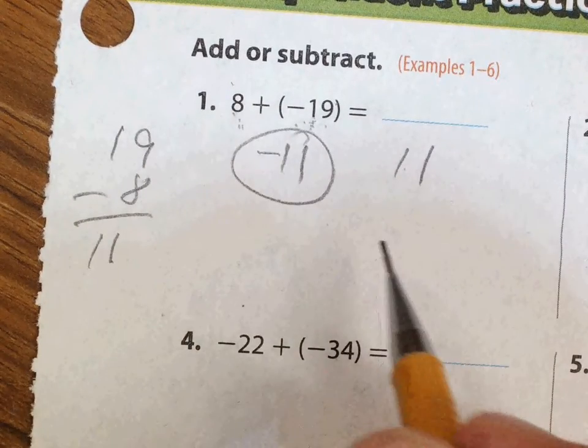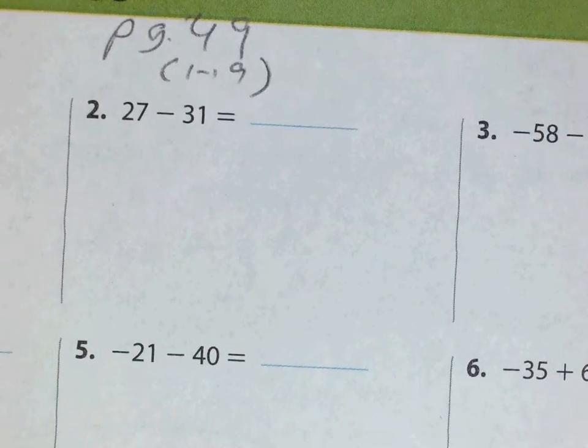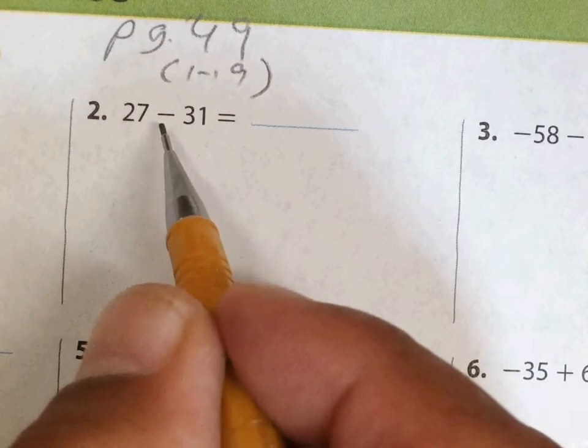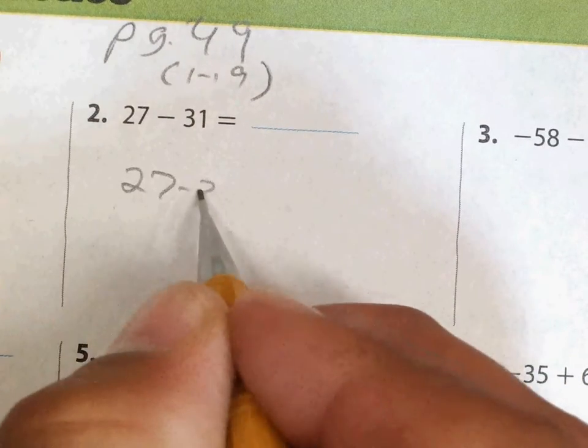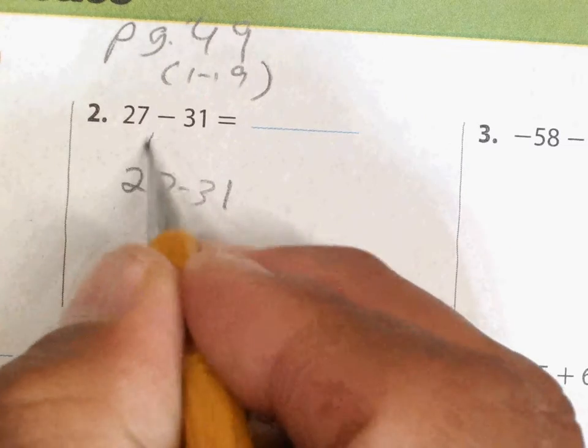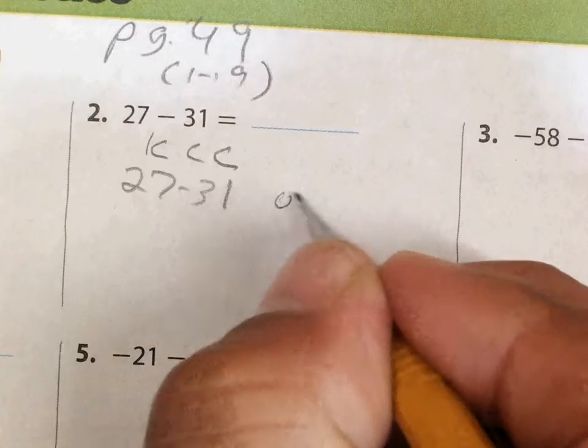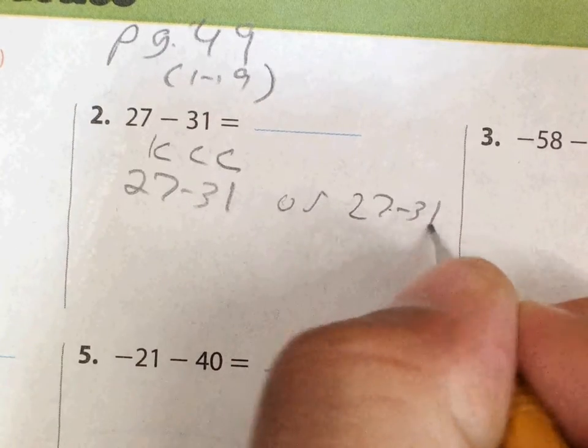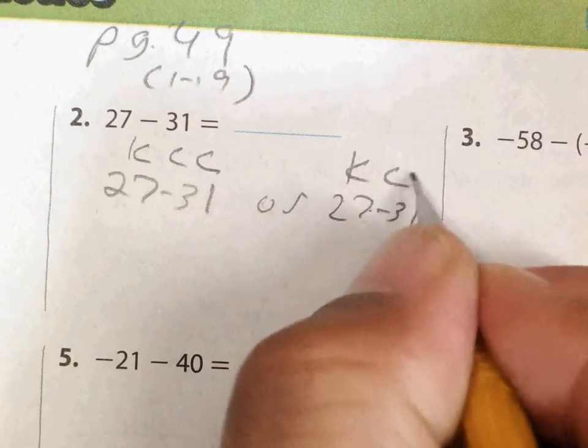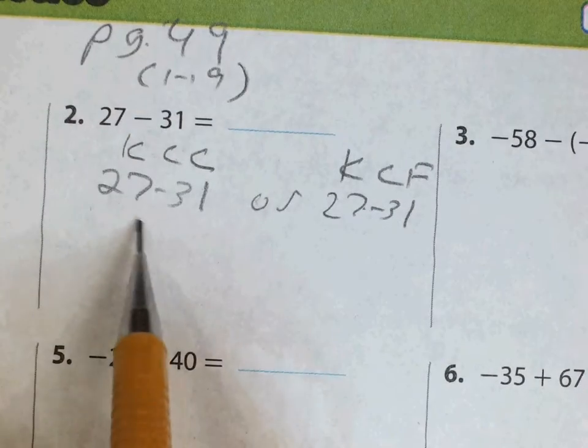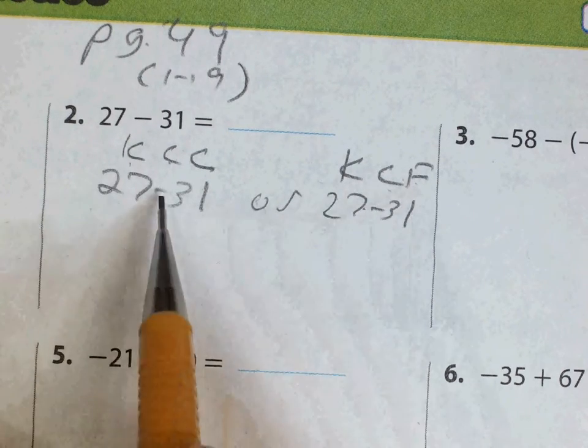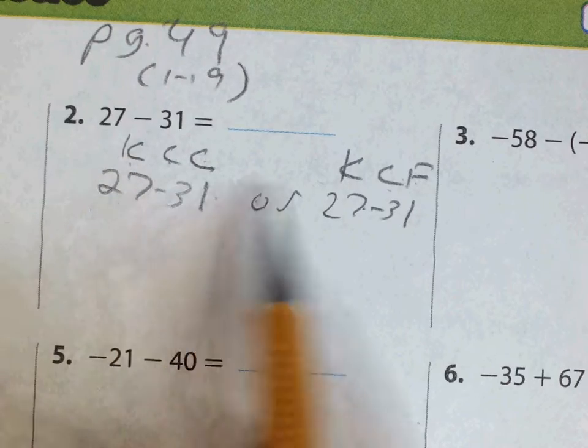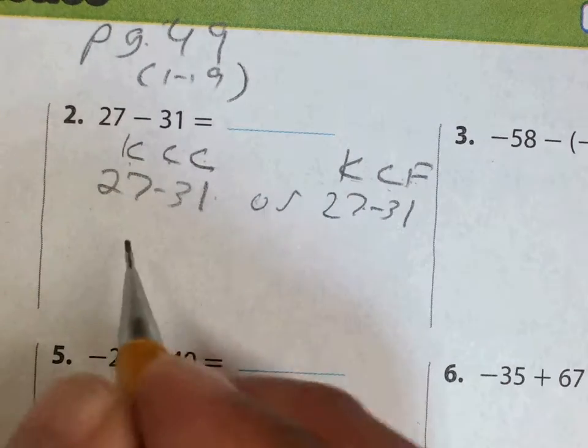Let's try to do a different one. I'm looking at number two. Here we start with not addition but subtraction. So with subtraction, we can use the strategy that some of you learned in sixth grade as KCC or KCF. They mean the same thing: Keep-Change-Change or Keep-Change-Flip. Both ways I'm gonna keep the 27.